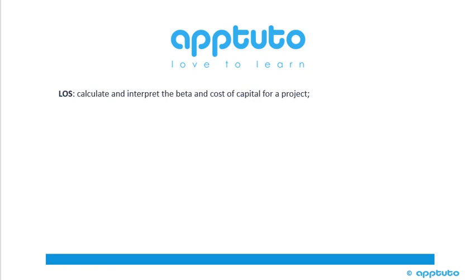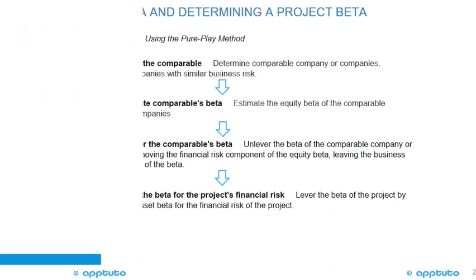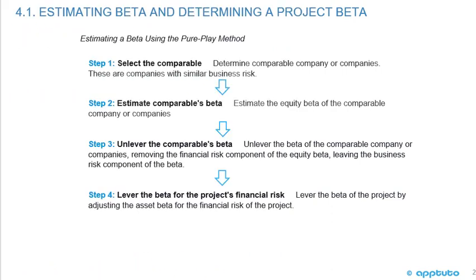This LOS is to calculate and interpret the beta and cost of capital for a project. We're looking at estimating a beta and determining a project beta. There are four steps in estimating a beta using the pure play method. Step one is to select the comparable — determine a comparable company or companies. These are companies with similar business risk.